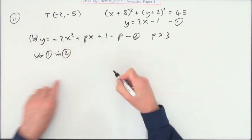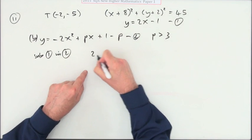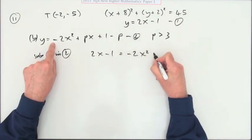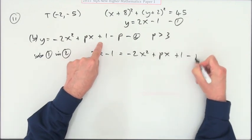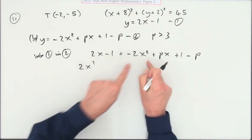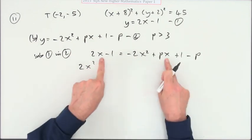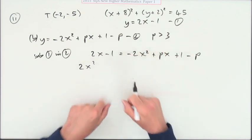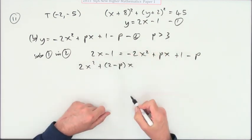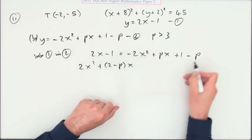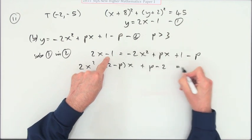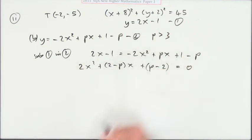So that means that y, which is 2x minus 1, should equal negative 2x² plus px plus 1 minus p. Bring it all over—that will be a positive 2x². Now there's 2x terms. There'll be a 2 and a minus p lots of x, so I'll put that together: 2 minus p lots of x, so 2x minus px. And then bringing the numbers, I've got minus 1 minus 2 but plus p, so that's p minus 2 equals 0. And I'll put a wee bracket around them just to make that stand out because that's a quadratic I've got to solve.